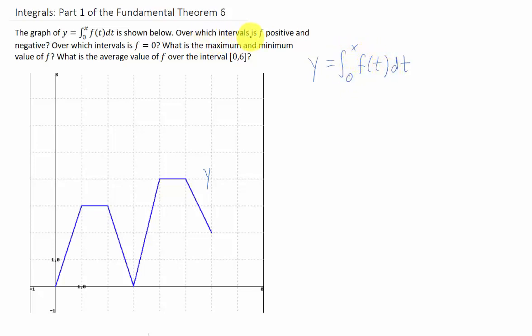Then we're asked, over which intervals is f, this function inside here, positive and negative, and over which intervals is this function zero. Now we're supposed to base that on this graph.